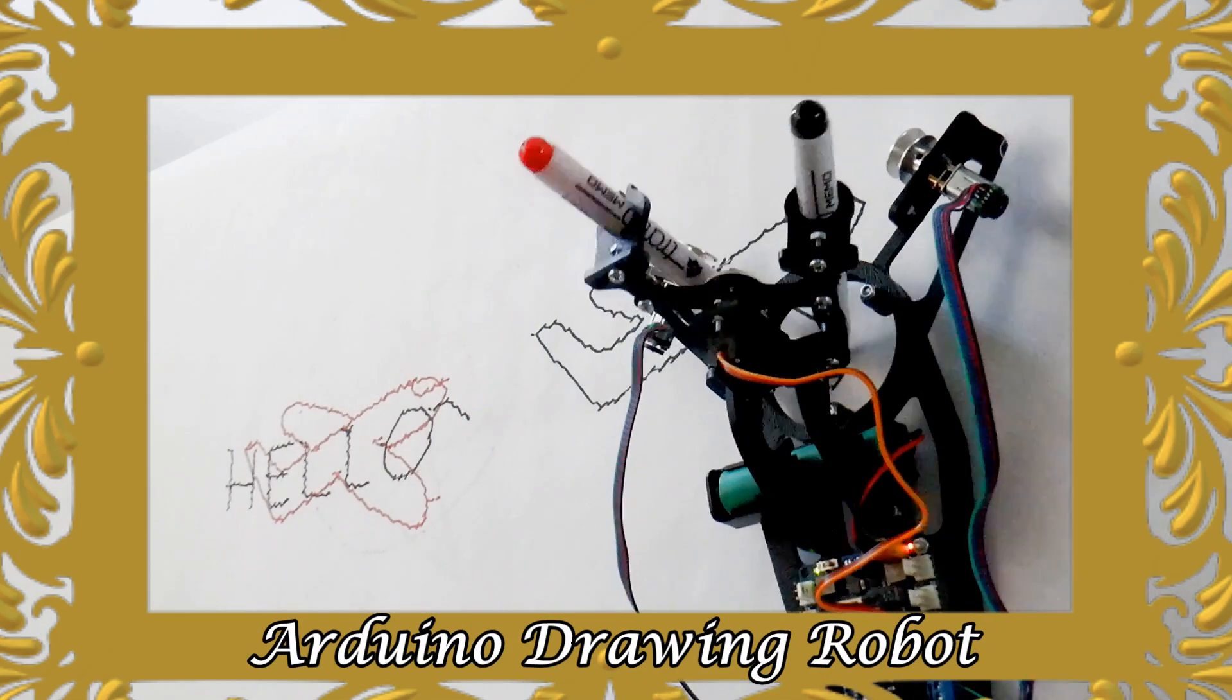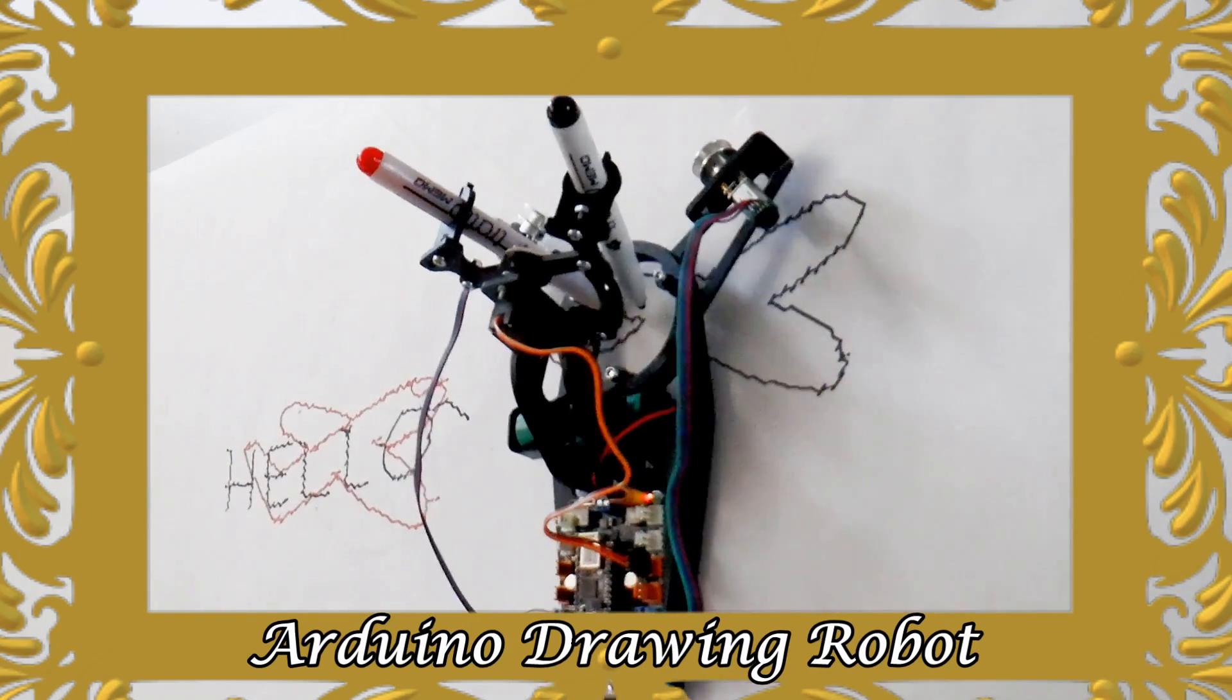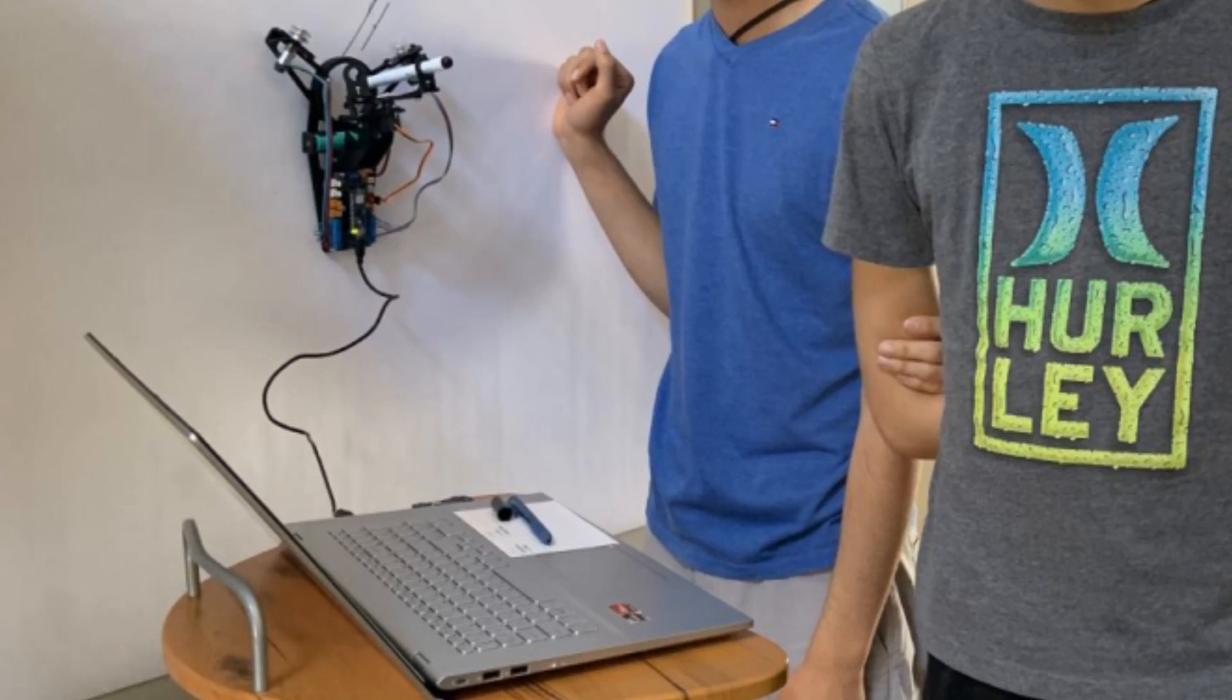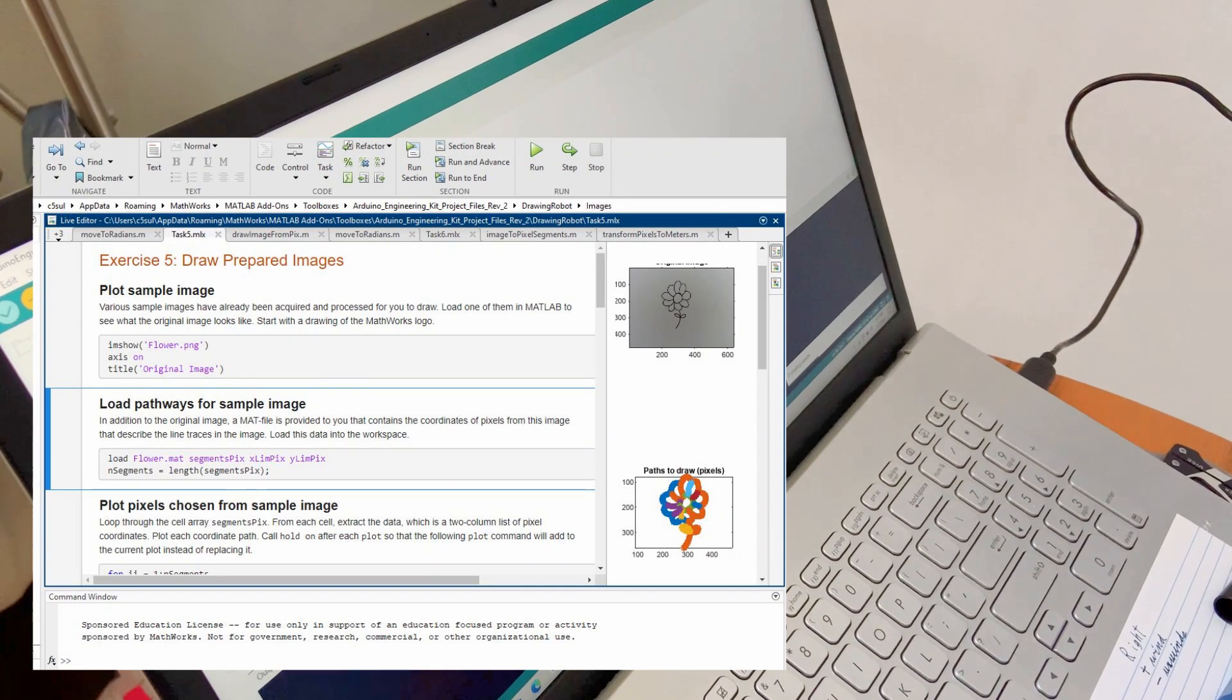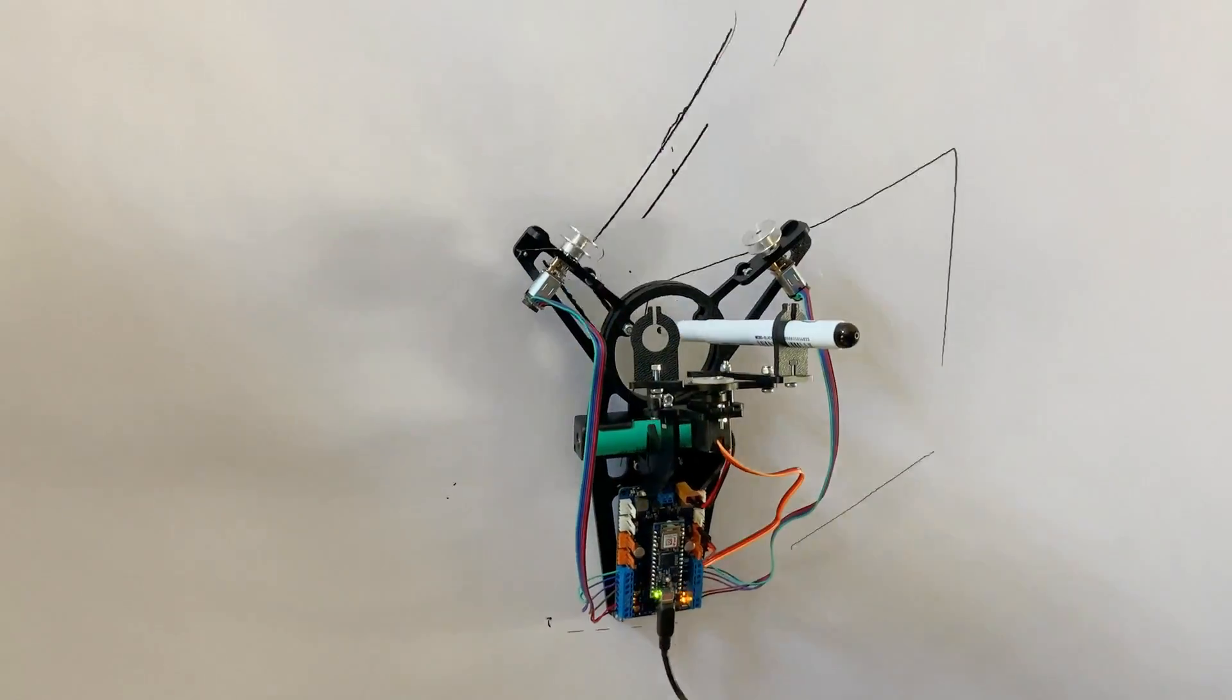This drawing robot is from the Arduino engineering kit R2. It came with MATLAB, which is an application that is capable of performing complex mathematical functions. In short, MATLAB takes the picture and tells the robot where to go. Here's how it works.